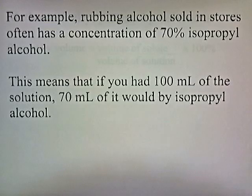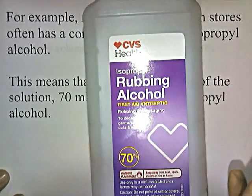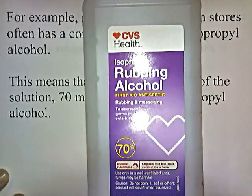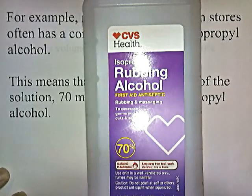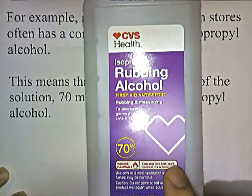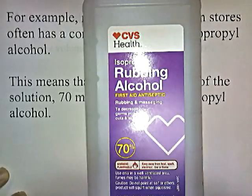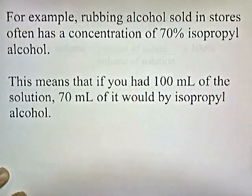Here's an example — this is a container of rubbing alcohol. Notice that it says 70% right here. So it just means that if you had 100 milliliters of the solution, 70 milliliters of it would be isopropyl alcohol. That's percent by volume.